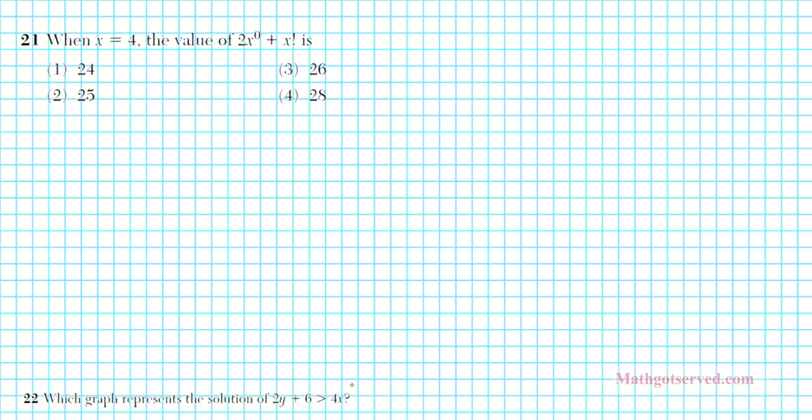Let's take a look at question number 21. It says when x equals 4, the value of 2x to the 0th power plus x factorial is. So you have to remember what the 0th exponent rule is. If you raise a non-zero number n to the 0th power, you have to remember that it equals 1. And also n factorial can be reduced or expanded into n times n minus 1 times n minus 2, and this product continues descending until you end up with 2 times 1.